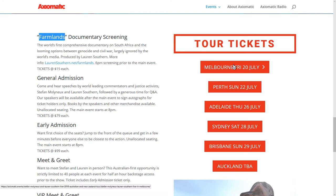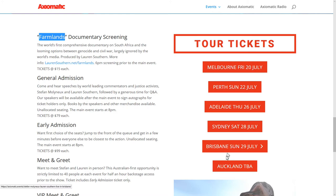So Melbourne, Friday, 20th July. Perth, Sunday, 22nd July. Adelaide, Thursday, 26th July. Sydney, going to be lit. Saturday, 28th July. Brisbane, Sunday, 29th July. And we're working on Auckland. Of course, I want to do it from the Shire. So we're still working on that. Just kidding. But we're still working on that.